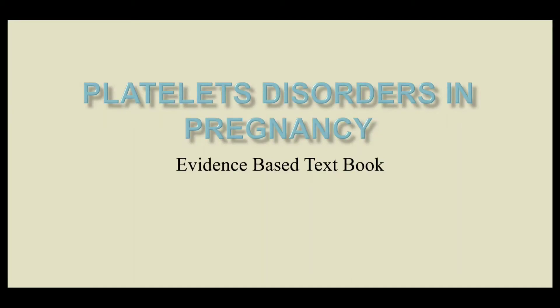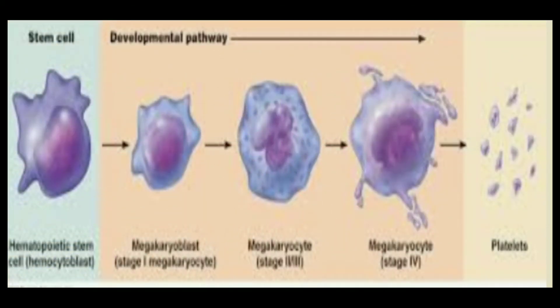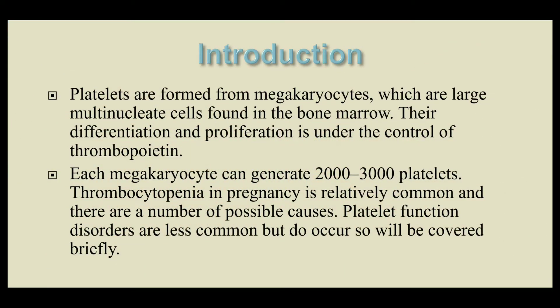Today we are going to discuss platelet disorders in pregnancy, and this topic has been taken from an evidence-based textbook of obstetrics and gynecology. By way of introduction to thrombocytopenia in pregnancy: platelets are formed from megakaryocytes, which are large multinucleate cells formed in the bone marrow, and their differentiation and proliferation is under the control of thrombopoietin. Each megakaryocyte can generate up to 2,000 to 3,000 platelets. Thrombocytopenia in pregnancy is relatively common and there are a number of possible causes. Platelet function disorders are less common but do occur, so will be covered briefly.